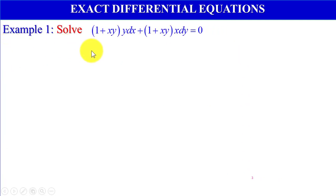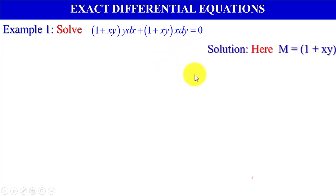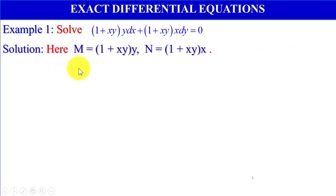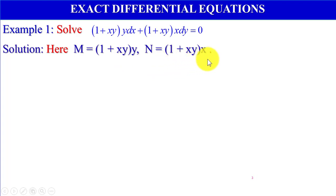Example 1: Solve (1 + xy)y dx plus (1 + xy)x dy equals 0. Here M equals (1 + xy)y and N equals (1 + xy)x, where M is the coefficient of dx and N is the coefficient of dy.